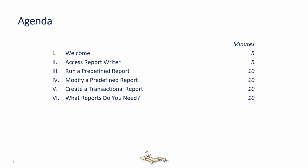Here's our agenda for today. We'll first show how to access Report Writer, then we'll find an existing predefined report that someone else has built and run it. Then we'll play around with modifying that report, making a few changes. Finally, we'll create our own report from scratch and wrap up with a discussion of additional reports that may be useful for you as an MCA user in the ImageTrend Elite system in Michigan.